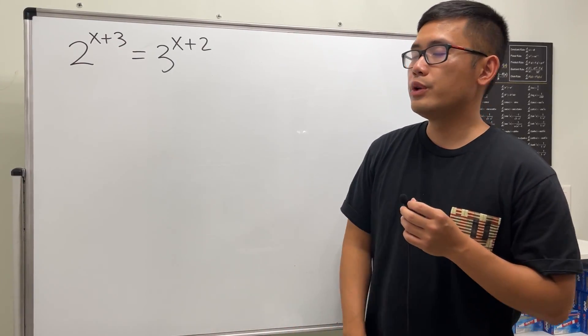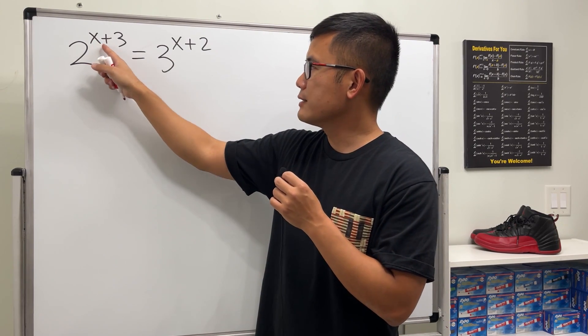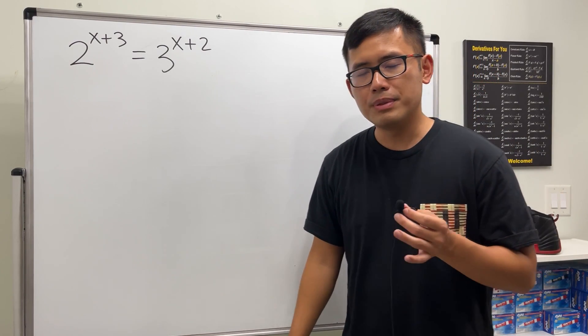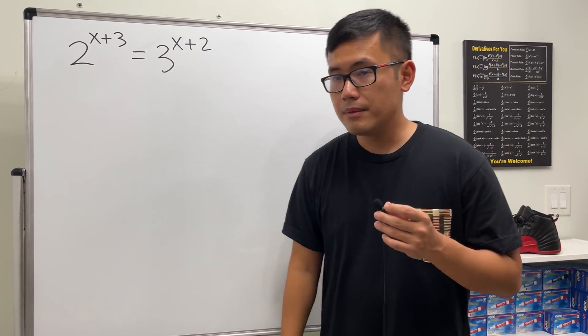Okay let's see how we can solve this exponential equation. We see that we have two different bases. We have 2 to the x plus 3 power and that's equal to 3 to the x plus 2 power. And you know the deal, please pause the video and try this first.